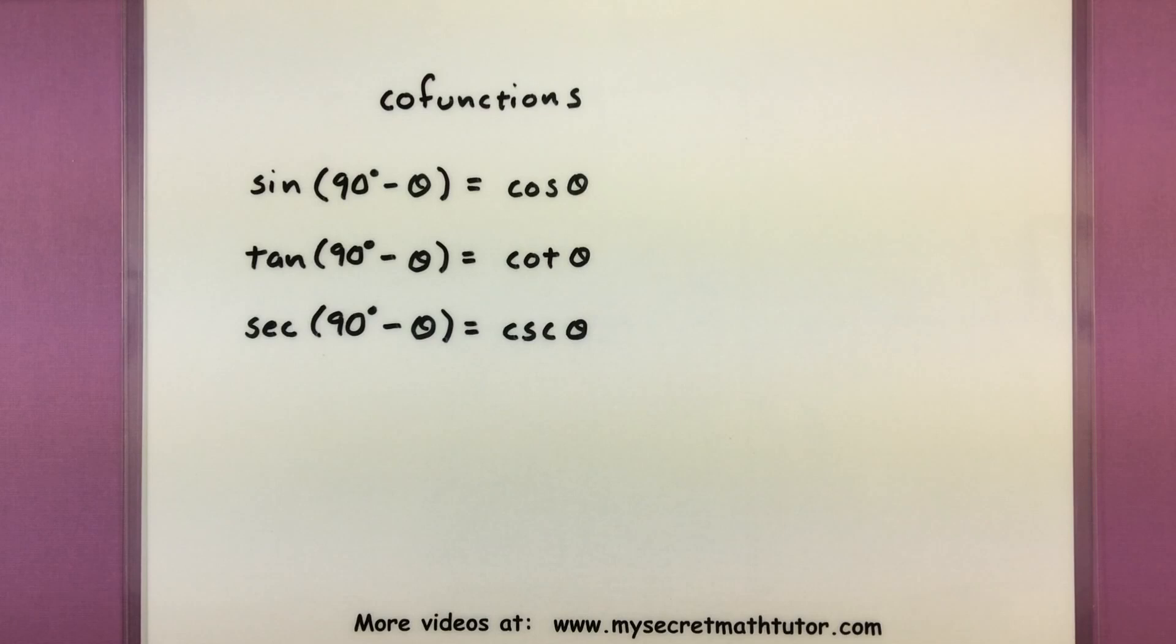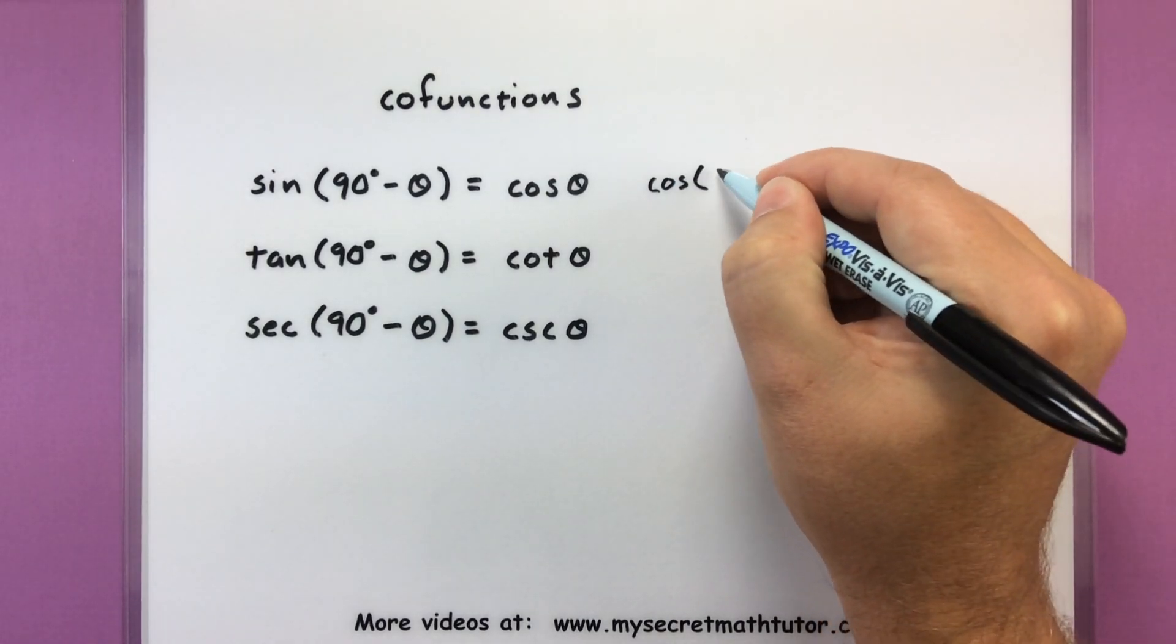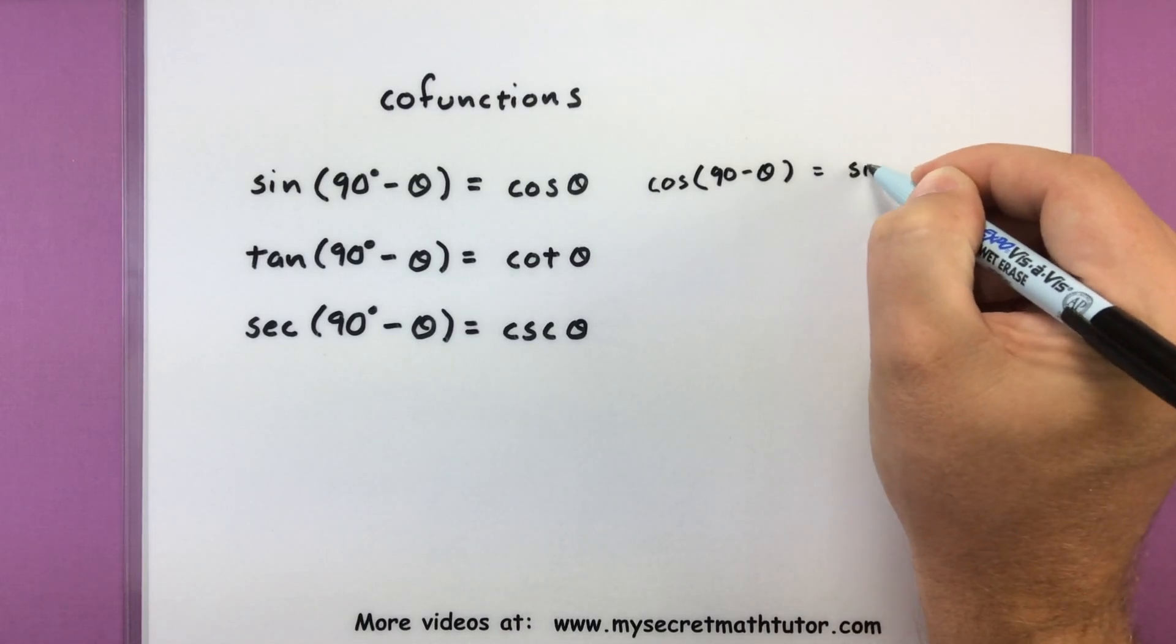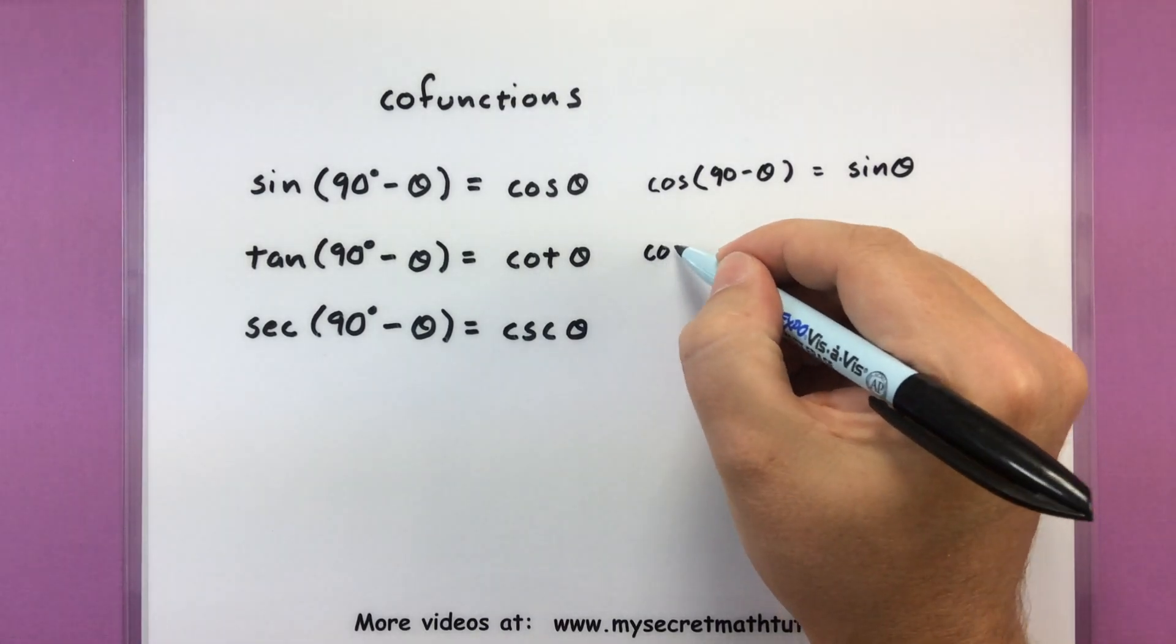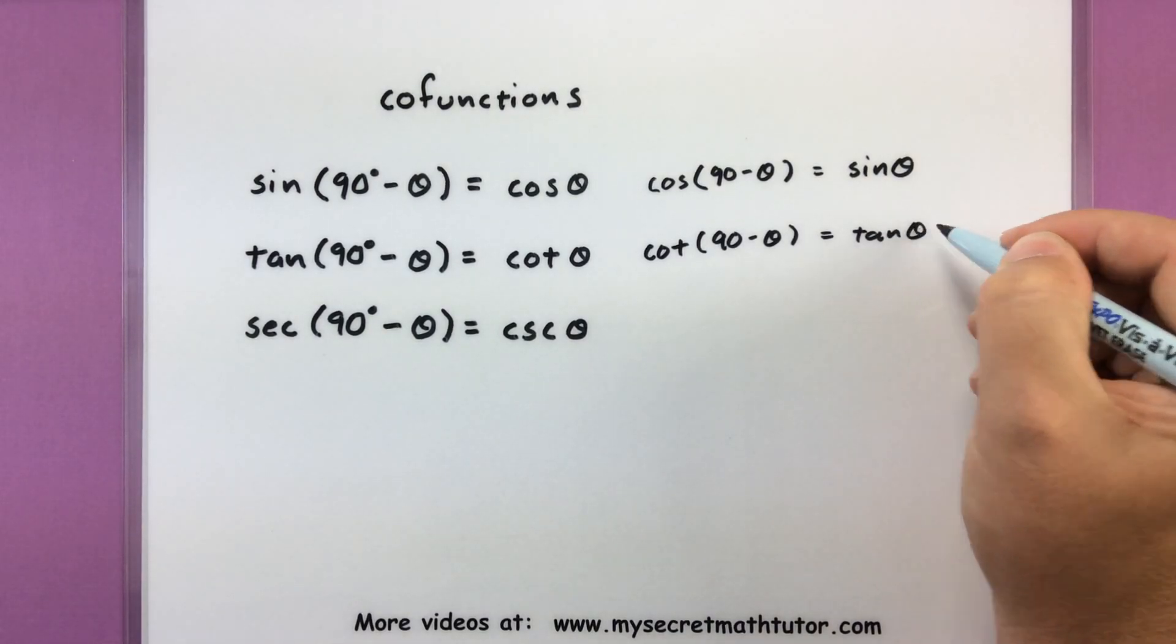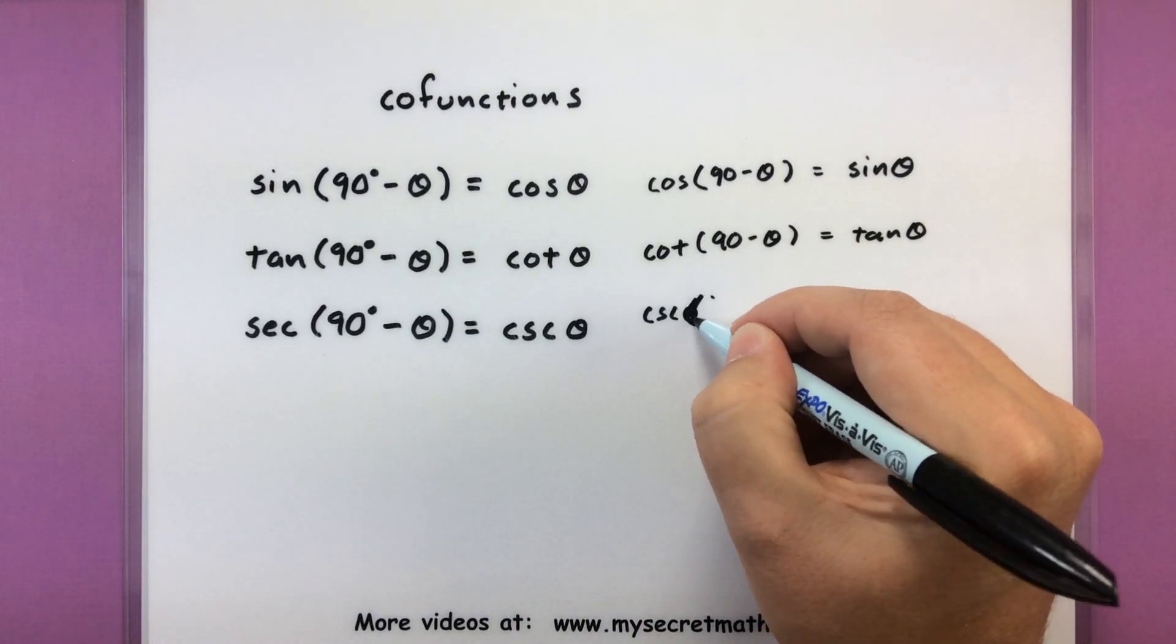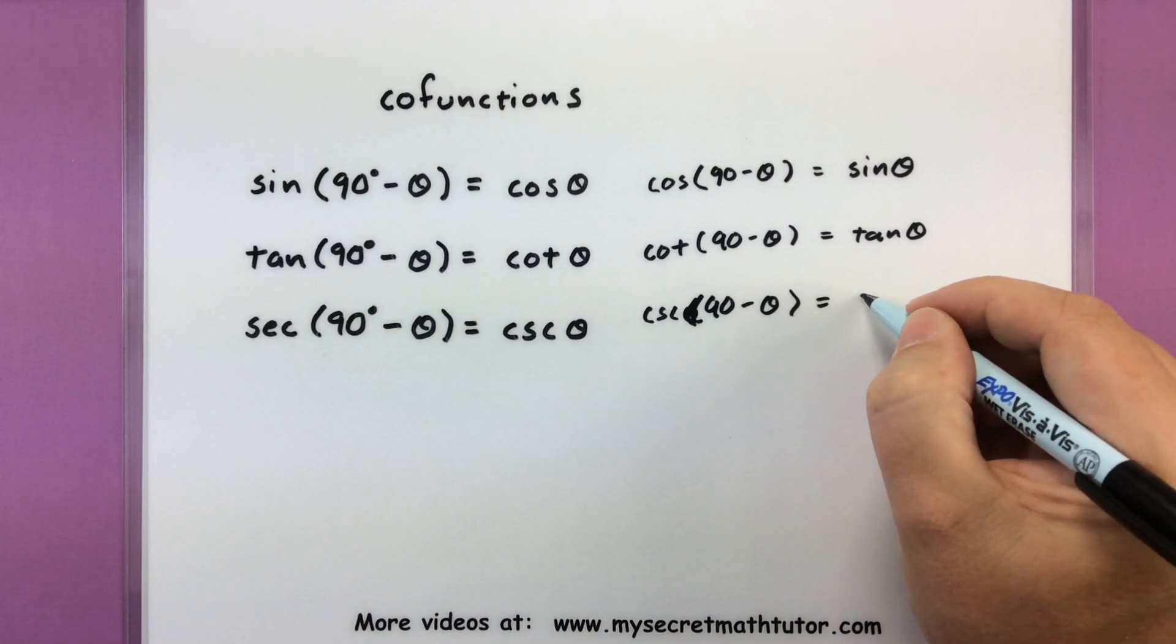Now it's interesting to note that these cofunction identities do work the other direction. So if you want, you can say that cosine of 90 degrees minus theta is equal to sine of theta. Cotangent of 90 minus theta is equal to tangent of theta. And cosecant of 90 minus theta is equal to secant of theta.